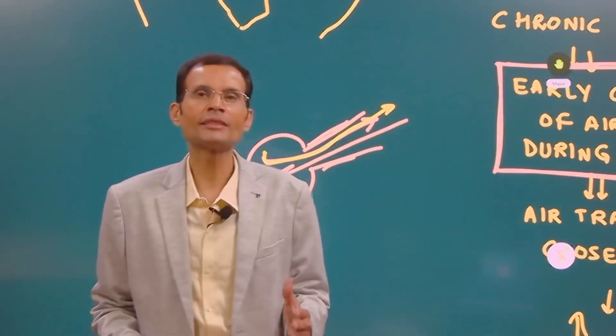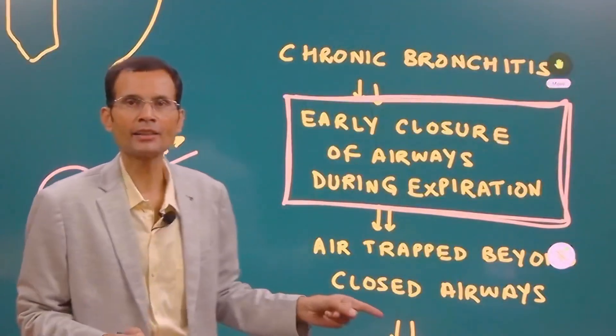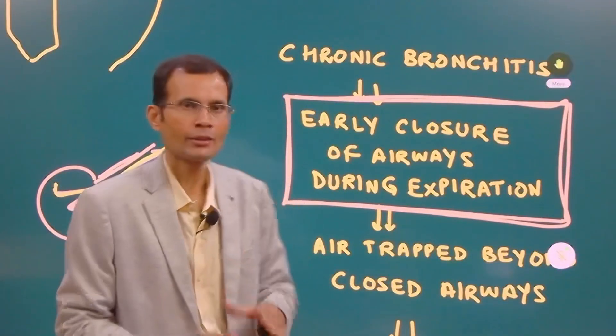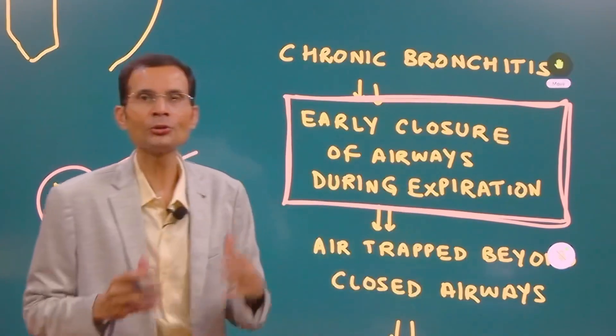What happens in COPDs like chronic bronchitis is this. This is the highlight and the key phrase: early closure of airways during expiration.